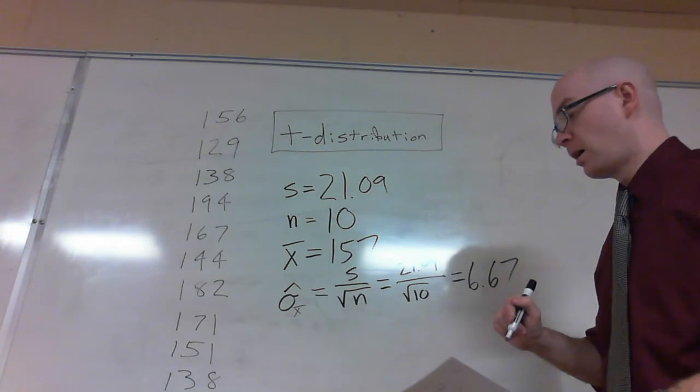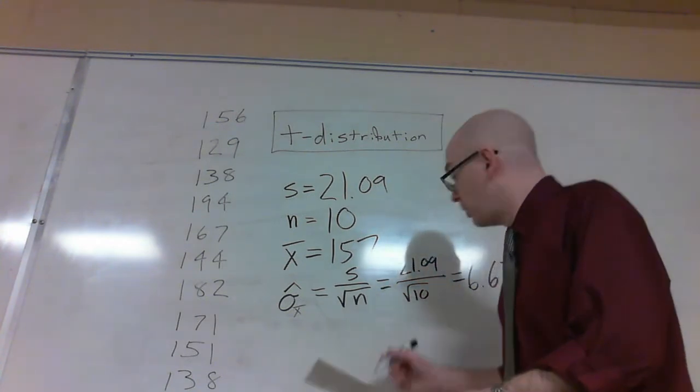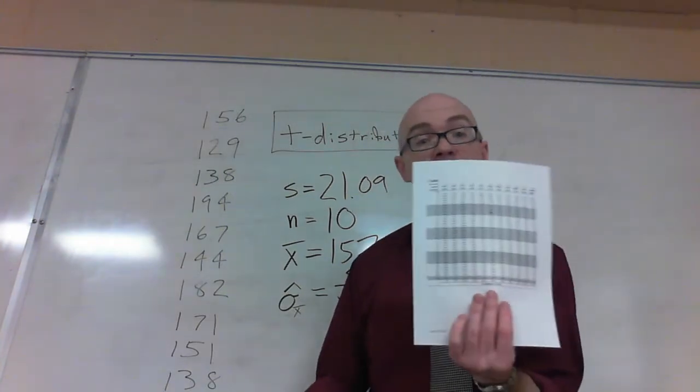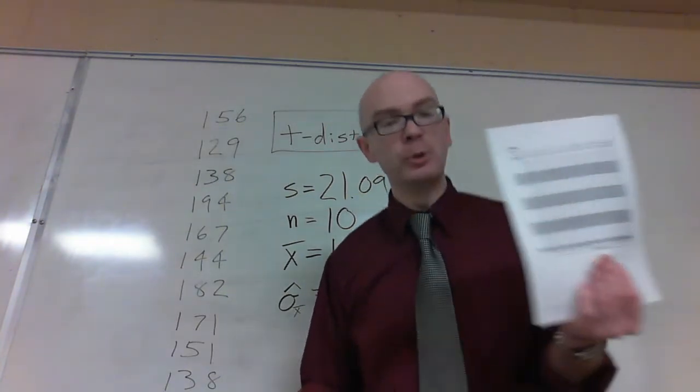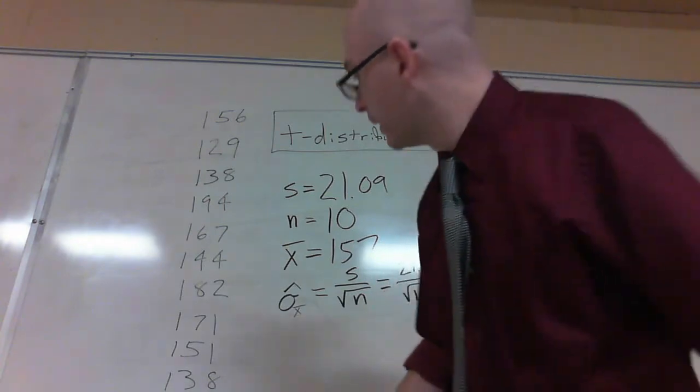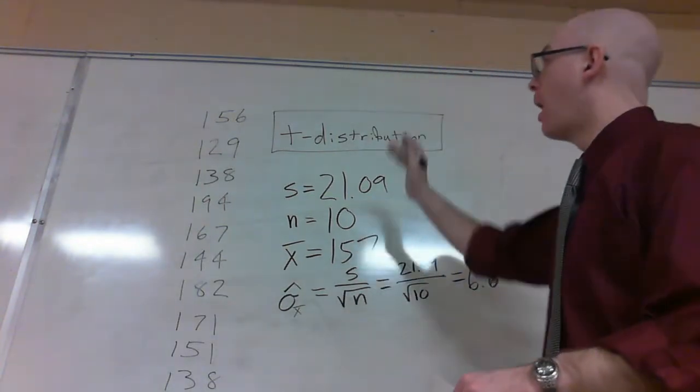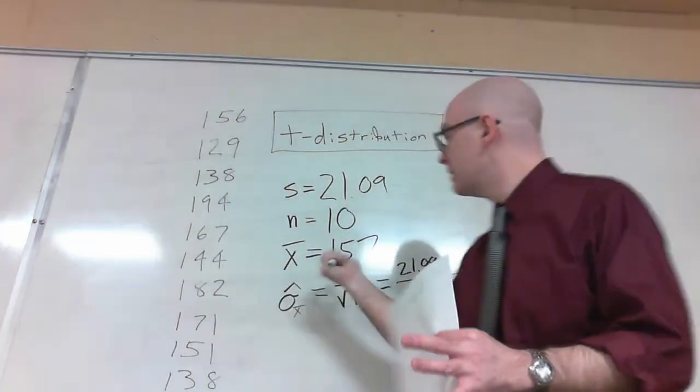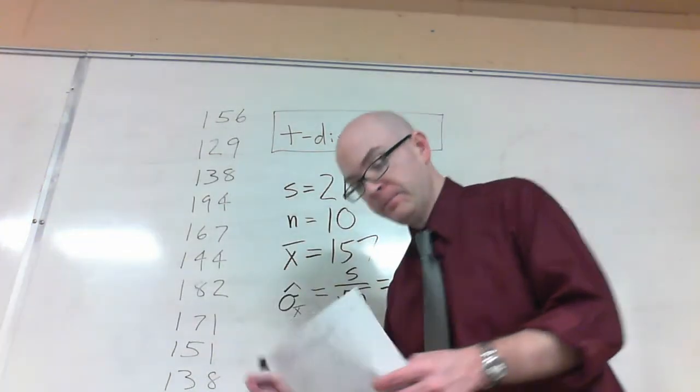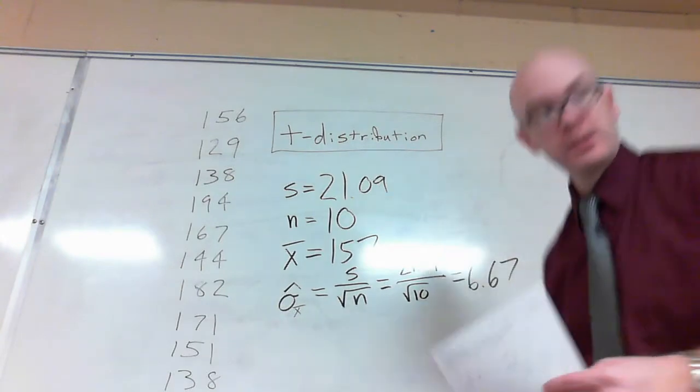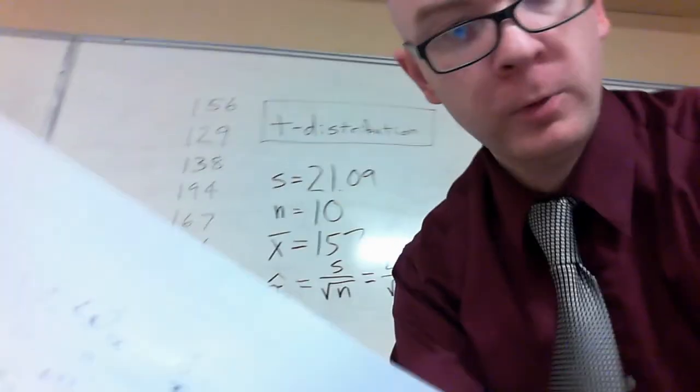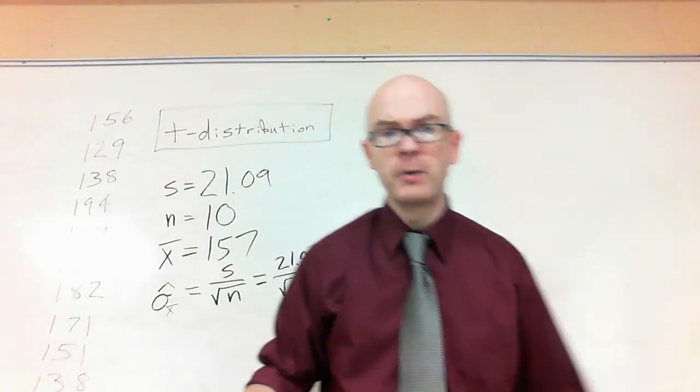Now, using this and using this guy called a t-distribution table, we're able to figure out where our mean for our whole population is likely to be given the data that we've got. So let's say I want to do this. Let's move a little bit here.